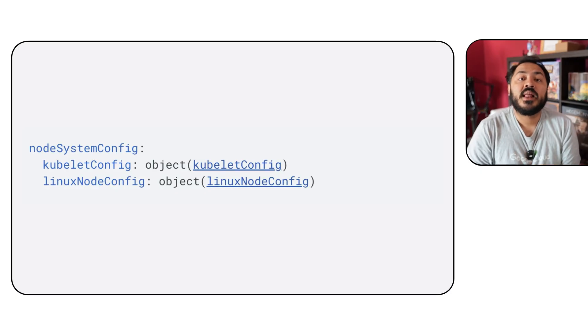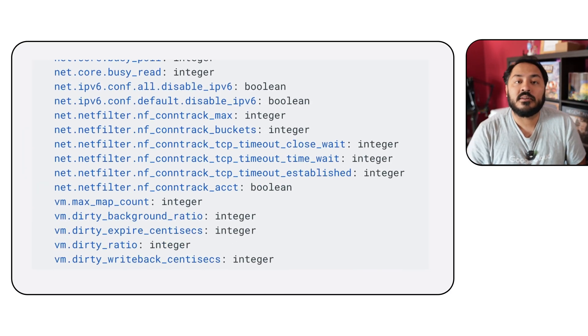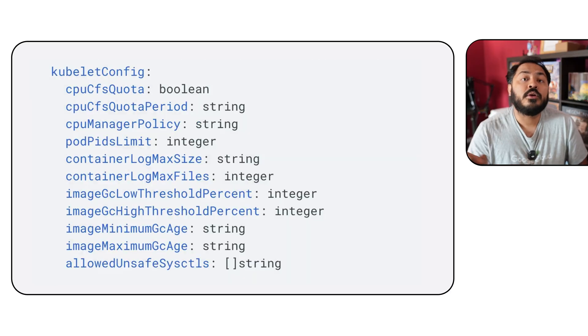We have also made improvements for compute classes. You can now enable node auto-provisioning — NAP for short — on a per-class basis, giving you more control over how GKE provisions your nodes. Additionally, compute classes now allow you to define and apply system-level configuration and tuning across all your nodes in a consistent and maintainable way. This is a huge improvement over having to manage custom scripts or daemon sets.